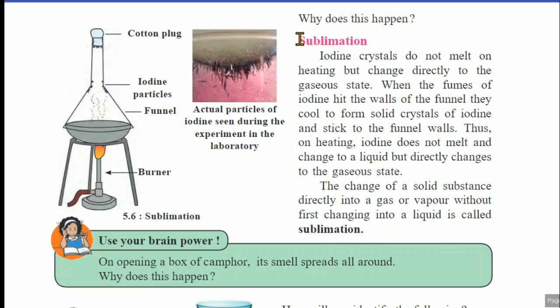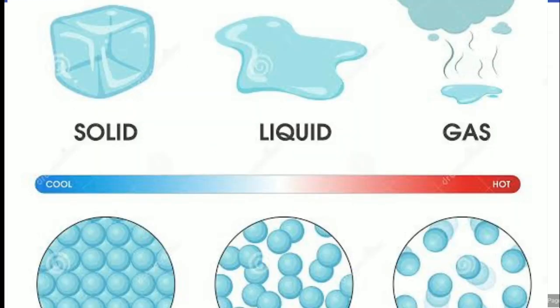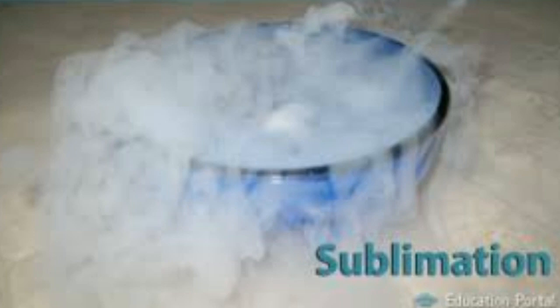What is sublimation? Here is the proper scientific definition: The change of a solid substance directly into a gas or vapour without first changing into liquid is called sublimation. We know the normal steps — solid converts into liquid, and then liquid converts into gas. But here, a solid substance directly changes into gas or vapour without converting into liquid. That process is called the sublimation process.